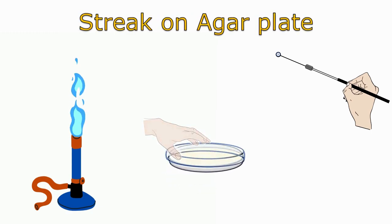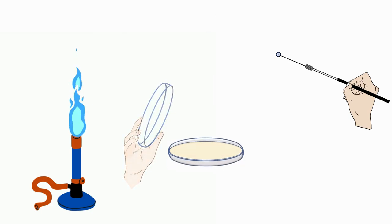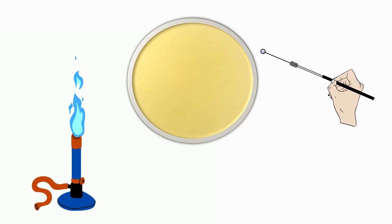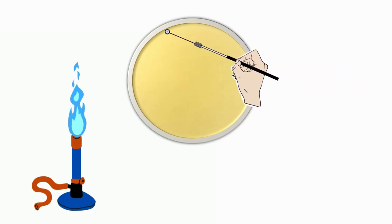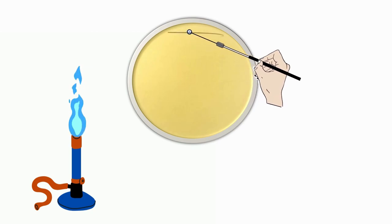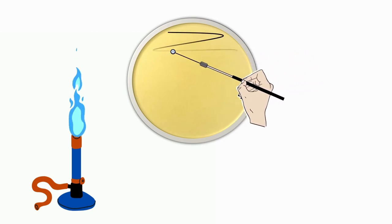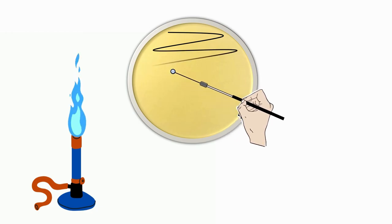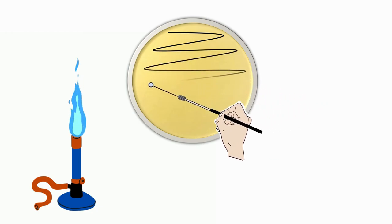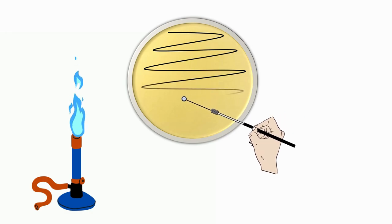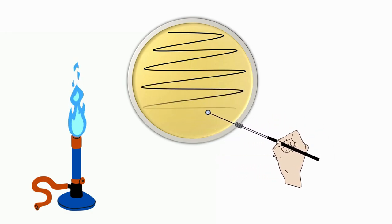Now take a sterile and dry nutrient agar plate. Open the lid of the agar plate for inoculation. Place the wire loop containing the sample near the edge of the petri plate and make streaks in a zigzag fashion. Use the entire area of the plate for inoculation.